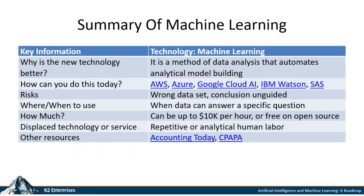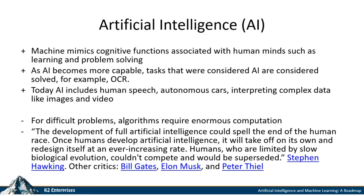There are free software suites for machine learning, and also proprietary ones. In summary, machine learning is a method of data analysis that automates analytical model building. You can do this with Google's cloud AI chips — tensor processing units — Amazon Web Services, Azure, IBM Watson, and SAS. If you use the wrong data set or have an unguided conclusion you may get an unexpected result. Costs range from free on open source applications to up to $10,000 an hour for virtual machine instances using Google's proprietary tensor processing units.